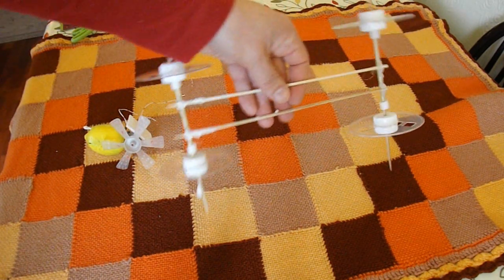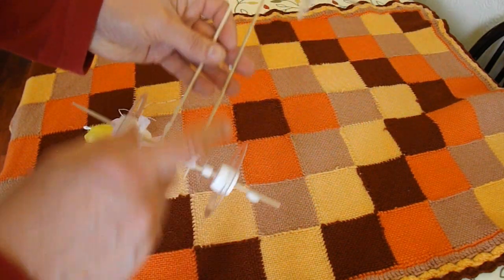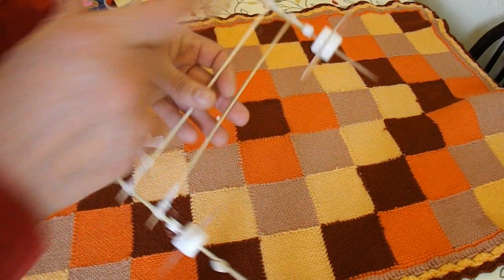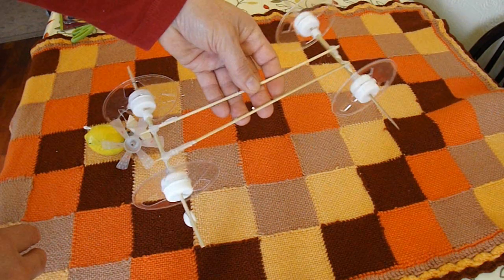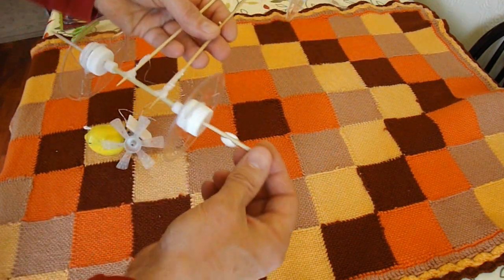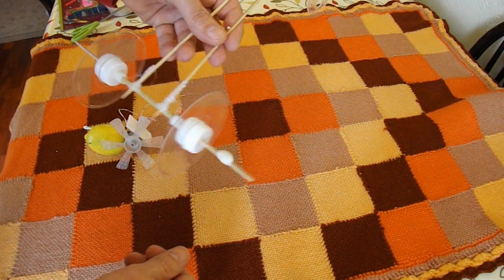There we are, that's the bare frame. So it's just four barbecue skewers, one for each axle and two for the chassis, drinking straws front and back for the barbecue skewers to go through.